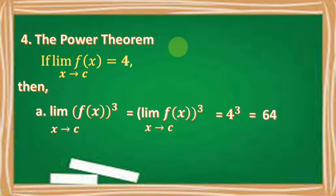Number 4: If the limit of x as x approaches c equals 4, then the limit of x cubed equals 64.